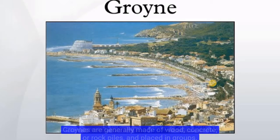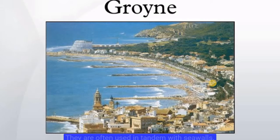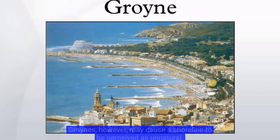Groins are generally made of wood, concrete, or rock piles, and placed in groups. They are often used in tandem with sea walls. Groins, however, may cause a shoreline to be perceived as unnatural.